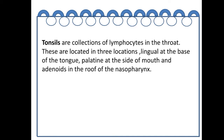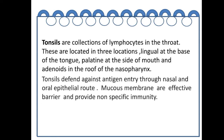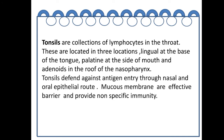Tonsils are collections of lymphocytes in the throat, located in three places: lingual tonsils at the base of the tongue, palatine tonsils at the side of the mouth, and adenoids in the roof of the nasopharynx. Tonsils defend against antigen entry through nasal and oral epithelial routes. Mucous membranes are effective barriers and provide non-specific immunity, making tonsils an important lymphoid organ.